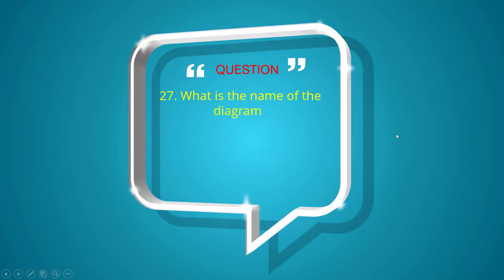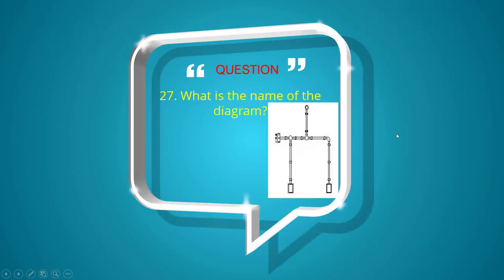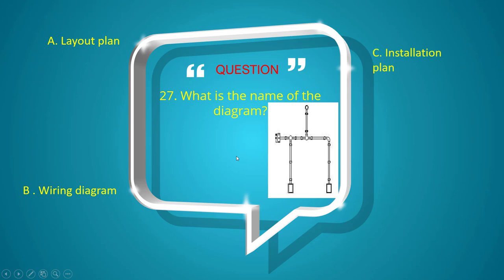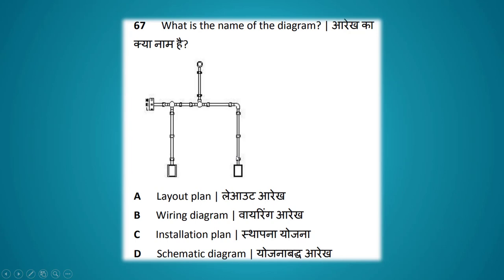What is the name of the diagram shown? Options: layout plan, wiring diagram, installation plan, schematic diagram. The answer is installation plan.